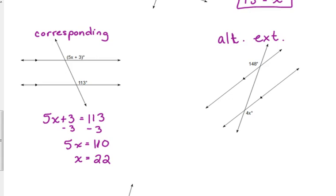So, alternate, any of our alternate ones are equal. So, 148 is equal to 4x. What is 148 divided by 4? 37.